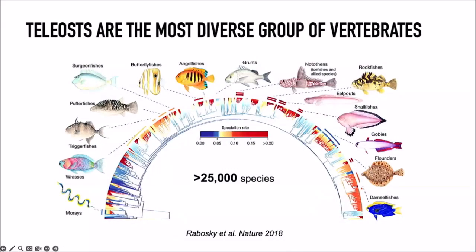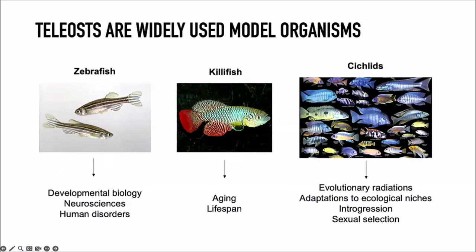We're going to talk about teleosts — which are basically most fish. When you think of a fish, you probably think of a teleost. They're an interesting group of vertebrates representing half of all known vertebrates, with over 25,000 documented species. They're widely used as model organisms: you're probably familiar with zebrafish for developmental biology and human disorders, killifish for aging and lifespan, and cichlids as a model of evolutionary radiation and introgression.